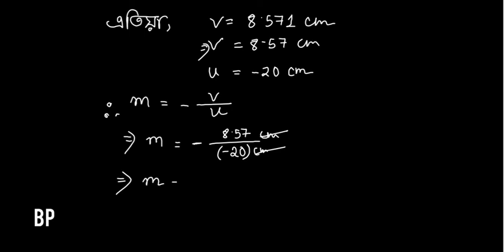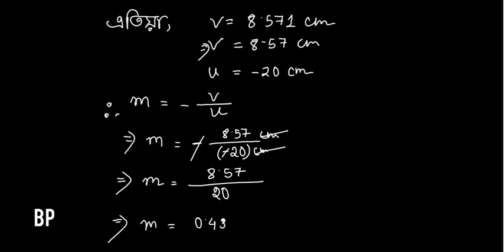The minus signs cancel out, so M is equal to 8.571 divided by 20. So we get M equal to approximately 0.4285 — that is about 0.43 times, meaning the image is diminished.